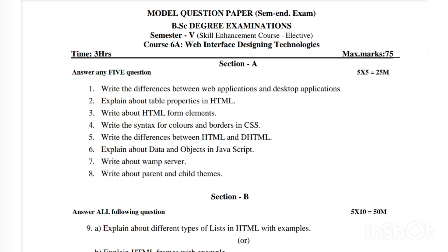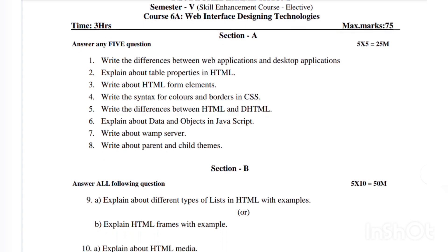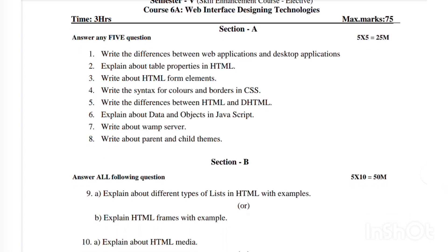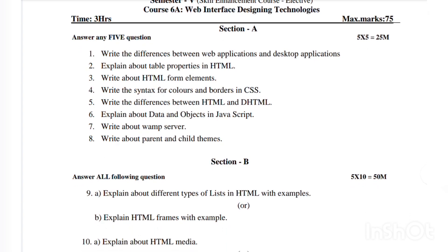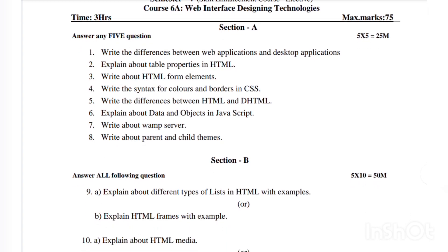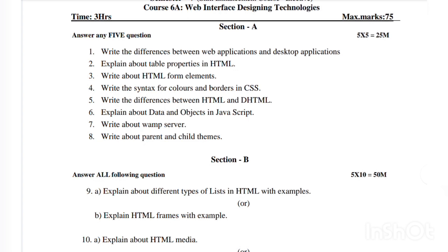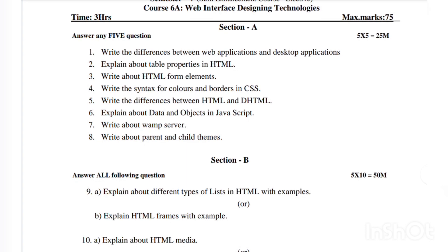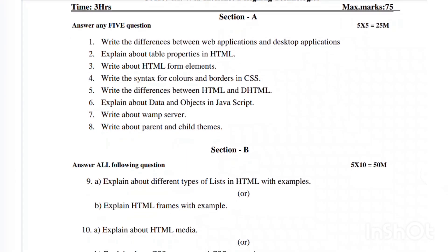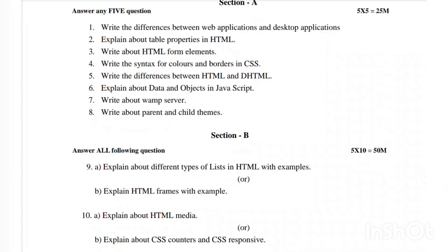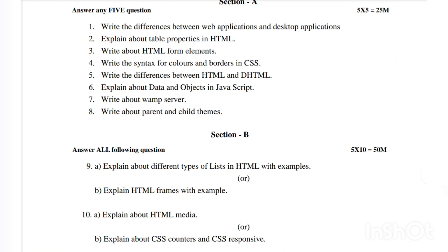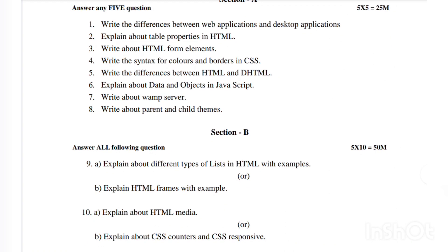Write about RAMP server. Write about parent and child themes. Then question 9: explain about different types of lists in HTML with examples. Explain HTML frames with example. Then explain about HTML media. And then explain about CSS counters and CSS responsive.